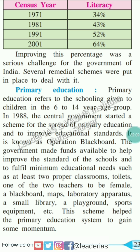The government made funds available to help improve the standards of the schools and to fulfill the minimum educational needs such as at least two proper classrooms, toilets, one of the two teachers to be female, a blackboard, maps, laboratory apparatus, a small library, a playground, sport equipment, etc. This scheme helped the primary education system to gain some momentum.